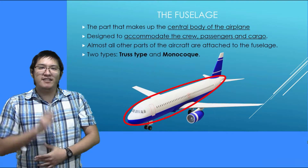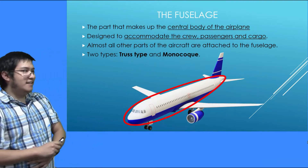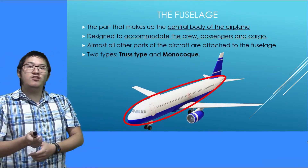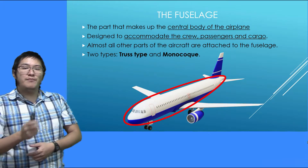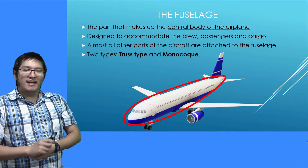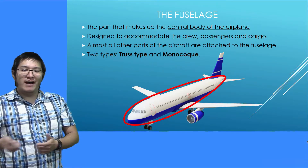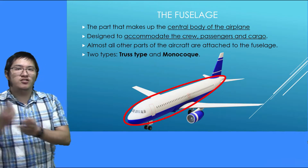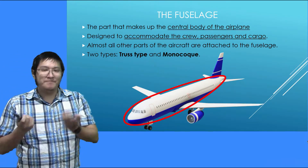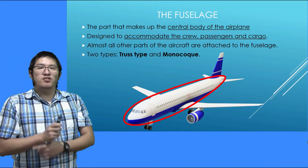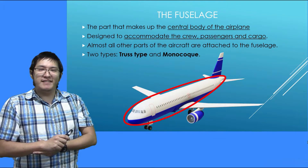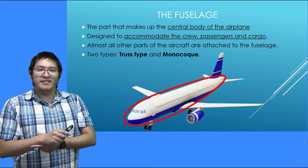Alright, let's go over the fuselage first. The fuselage is the part that makes up the central body of the airplane. This is where you find the crew, passengers, cargo, and pilots. Almost all other parts of the aircraft are attached to the fuselage in some way.